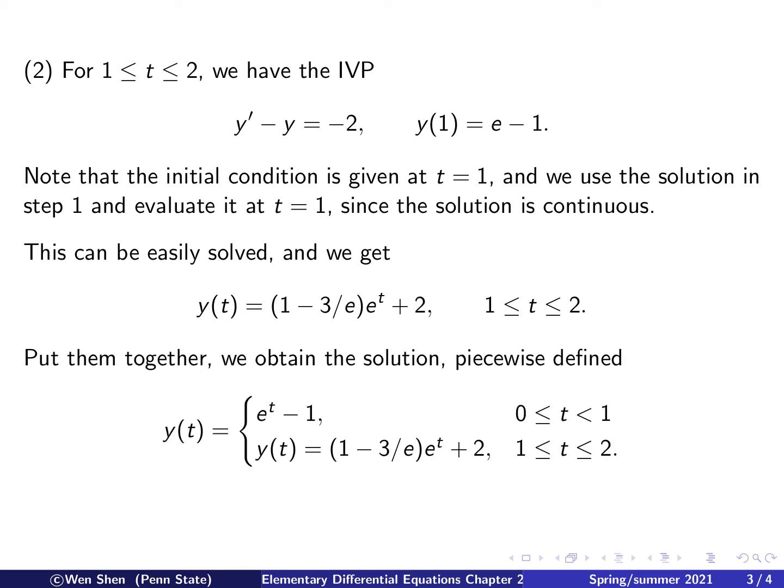And finally, we can put the two steps together and form our solution. So, our solution can also be written in a piecewise way because it takes different expressions on the different intervals for t. So, for t between 0 and 1, we have this one, which was obtained in step 1.